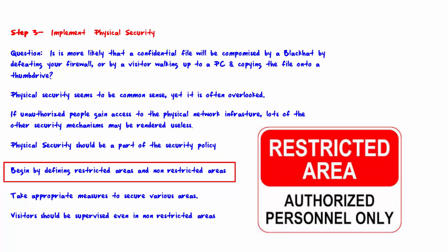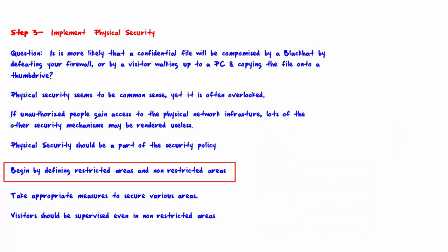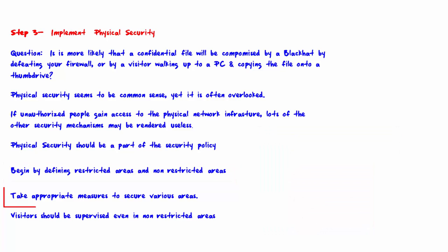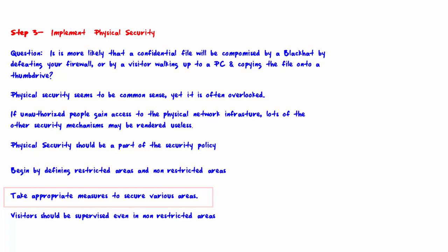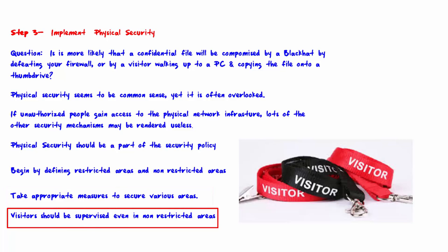Backup media or any equipment containing data should also be stored in a restricted area. Take appropriate measures to secure all areas — consider human security guards, various kinds of locks, biometrics, key cards, cameras, etc. Visitors should be supervised even when in non-restricted areas.